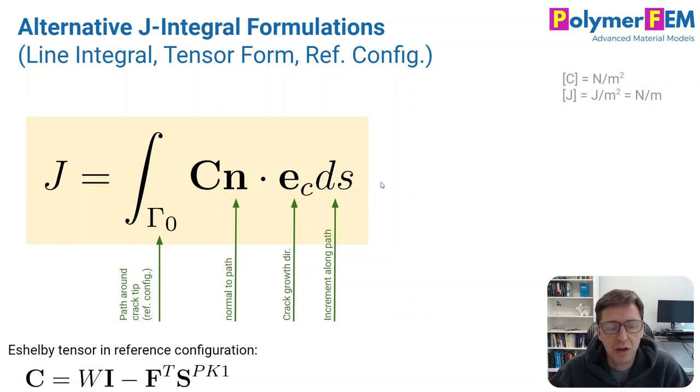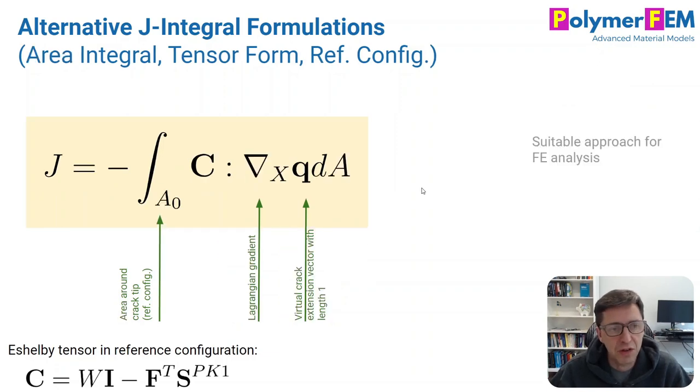So you can find the crack growth direction that is the direction that maximizes the J. And then you integrate this over a path around the crack tip. So that's another way to do it. It's in tensor form and a little bit more arbitrary and easier to use I think.